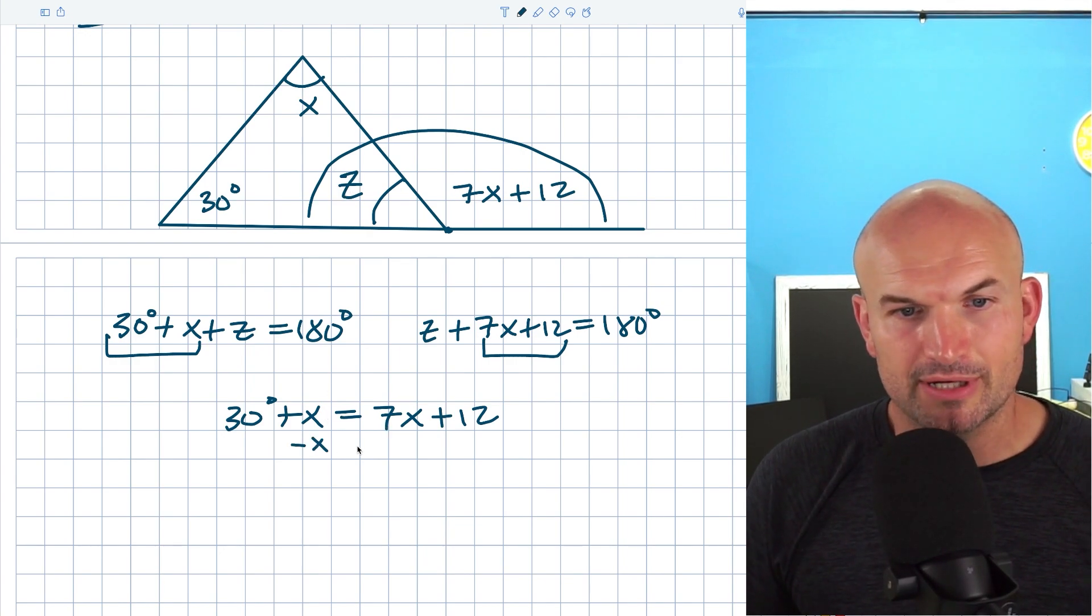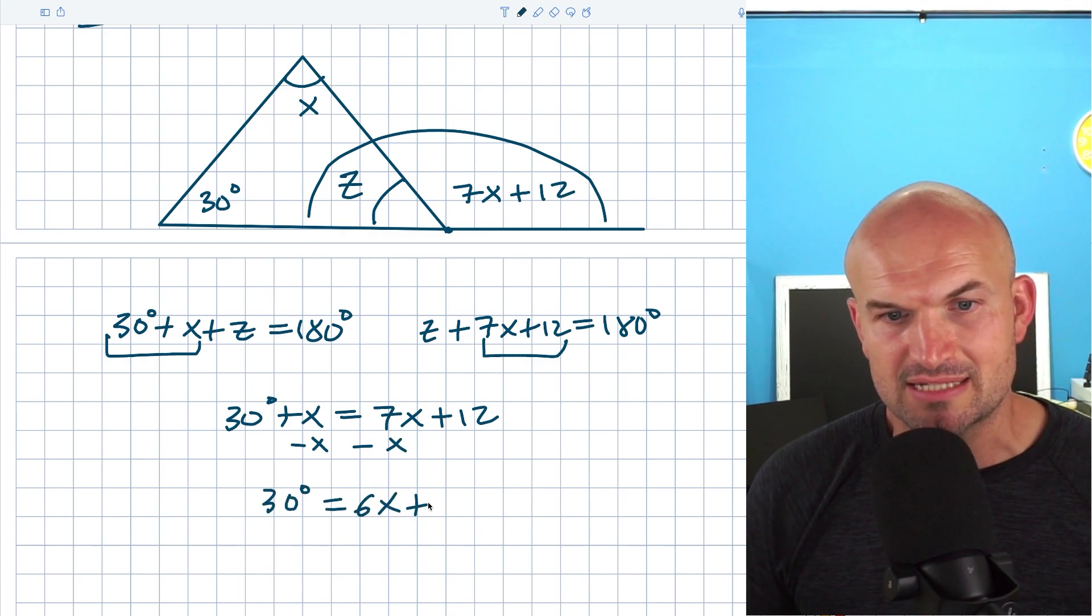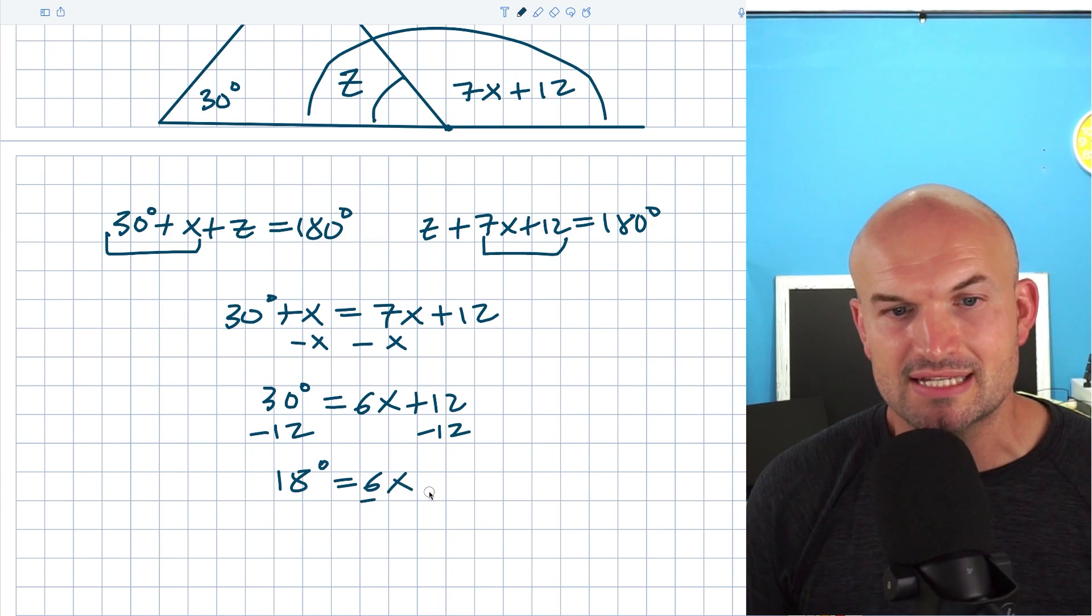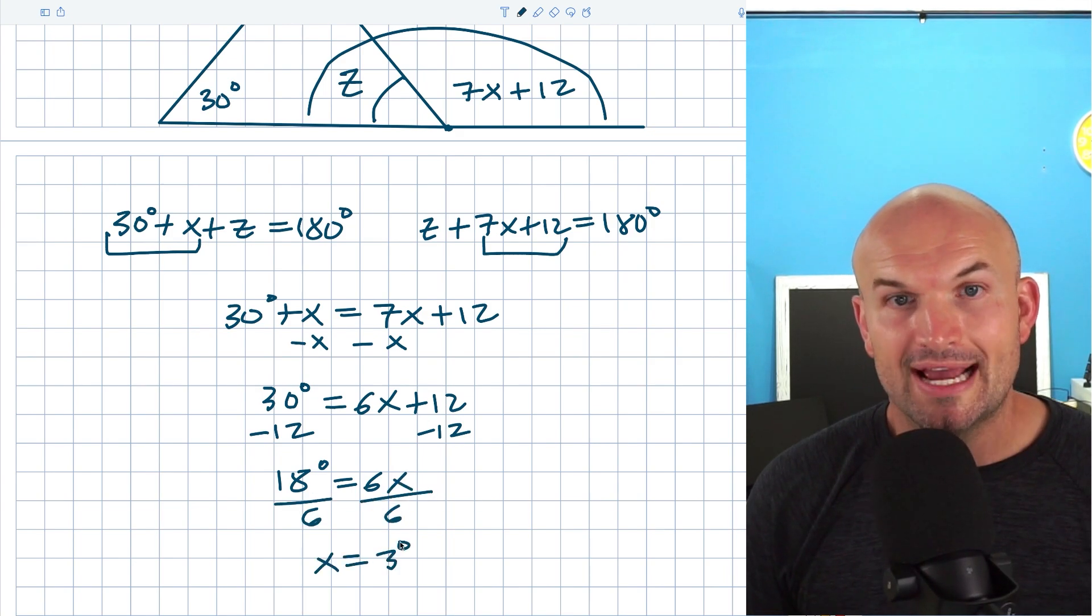Now I have an equation with the variable on both sides. So I'm going to subtract an X on both sides and I get 30 degrees equals 6X plus 12. Now to solve for X, I'll subtract 12 on both sides. Therefore, I'm going to get 18 degrees equals 6X, divided by 6, and X is going to equal 3 degrees.